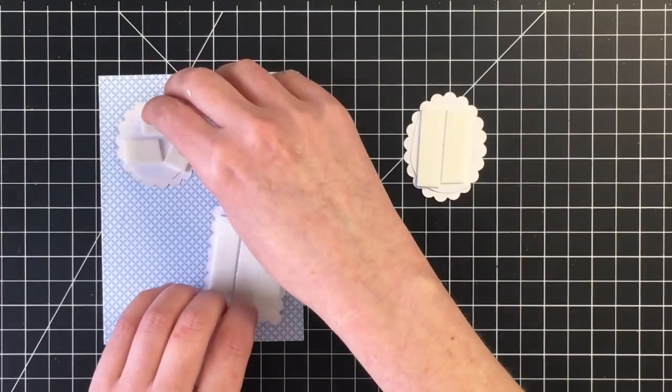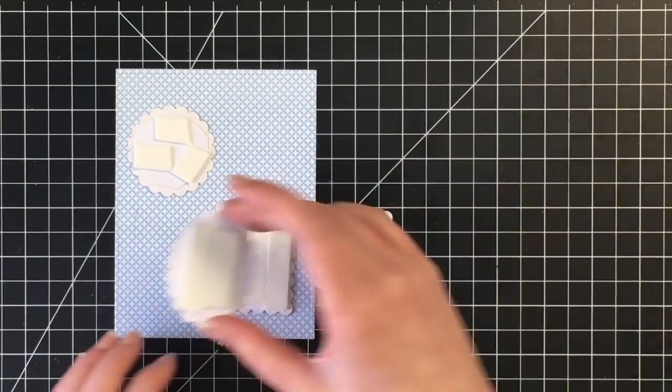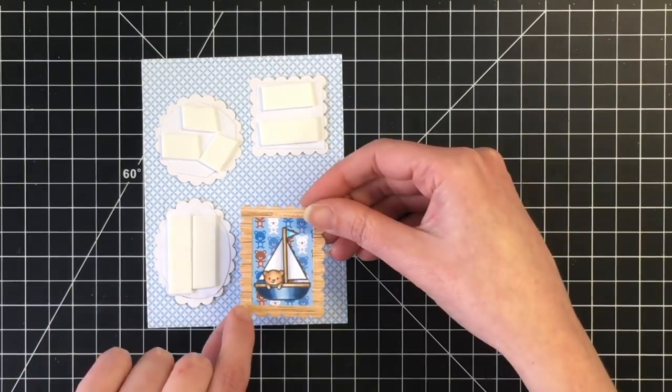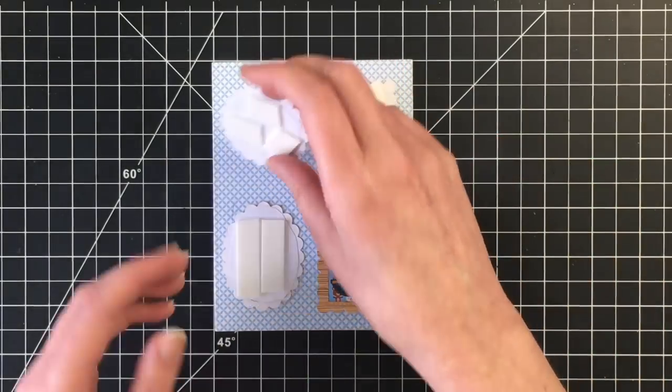So I went ahead and added some foam tape to all of the picture frames. I probably shouldn't have done this until I decided exactly which ones I wanted where but hindsight is always 20-20.